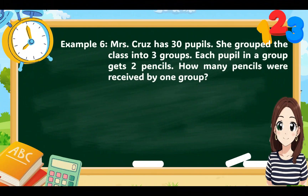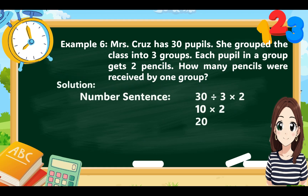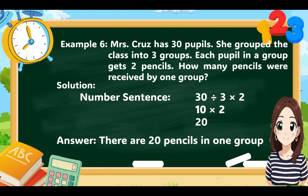Example 6: Mrs. Cruz has 30 pupils. She grouped the class into 3 groups. Each pupil in a group gets 2 pencils. How many pencils were received by 1 group? Number sentence: 30 divided by 3 times 2. So 30 divided by 3 equals 10, times 2 equals 20. There are 20 pencils in one group.